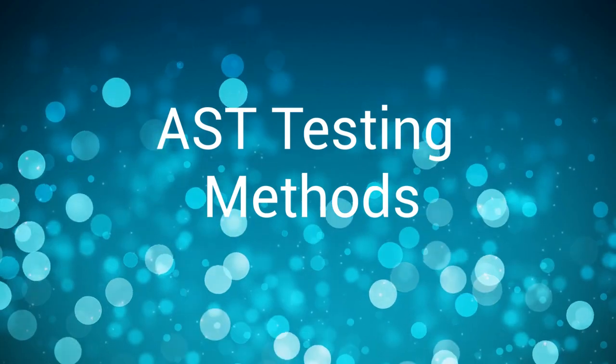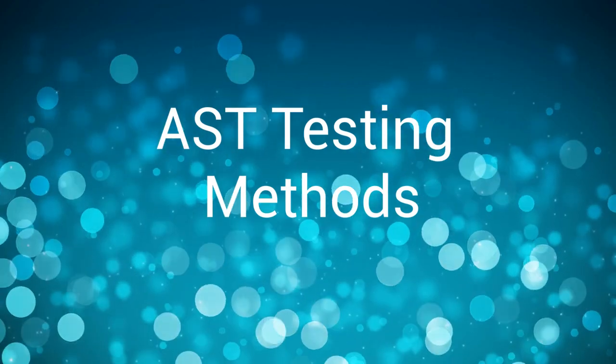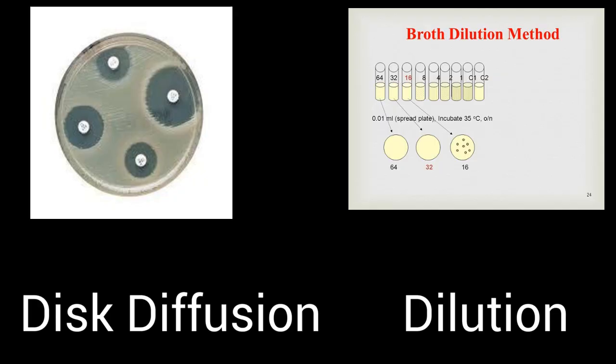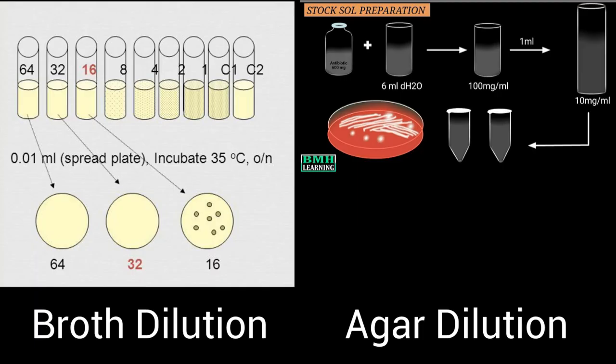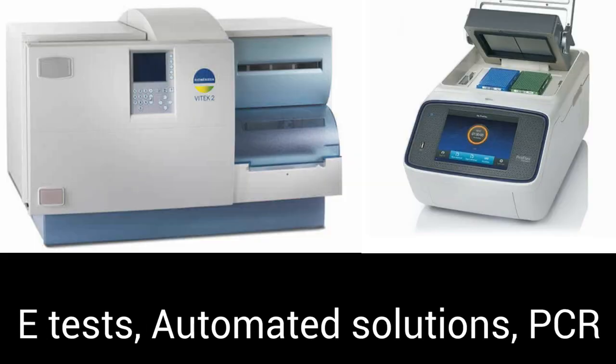AST testing methods are of two main types: the disc diffusion method and the dilution method. The disc diffusion methods are Kirby-Bauer disc diffusion and Stokes disc diffusion. The dilution methods are broth dilution and agar dilution.